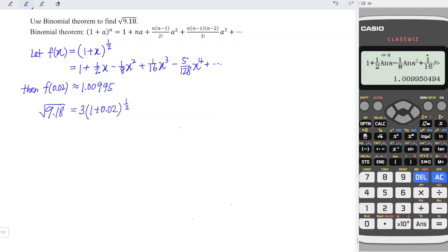Therefore, the value that we are looking for is simply 3 times answer. So this is equal to approximately 3.02985, rounded to the nearest five decimal places.